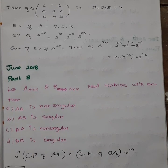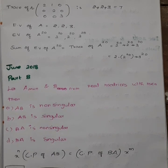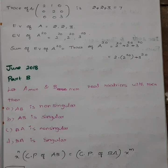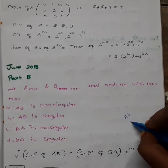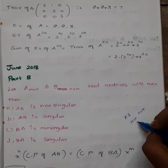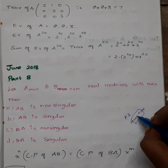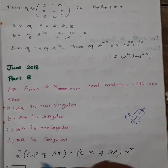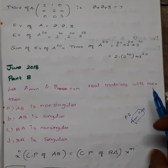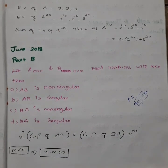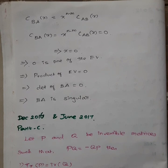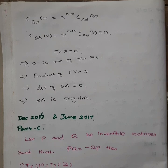The key relation is: x^n times the characteristic polynomial of AB equals the characteristic polynomial of BA times x^m. Here A is M×N and B is N×M. So the characteristic polynomial of AB relates to that of BA by a factor of x to the power n minus m, which can equal zero.